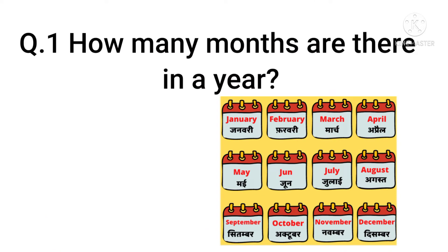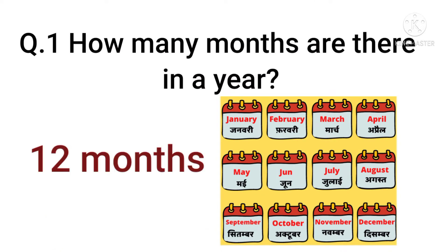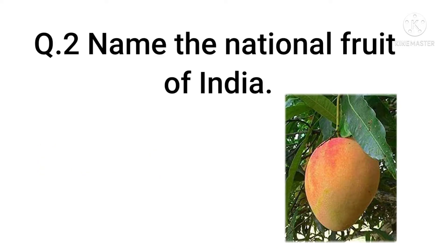How many months are there in a year? Answer: 12 months. Name the national fruit of India. Answer: Mango.